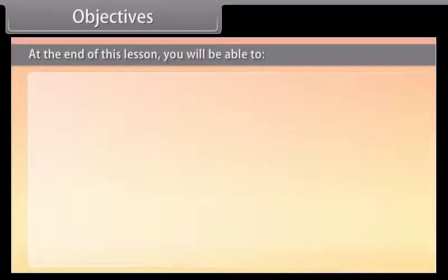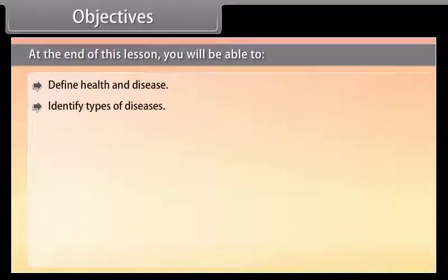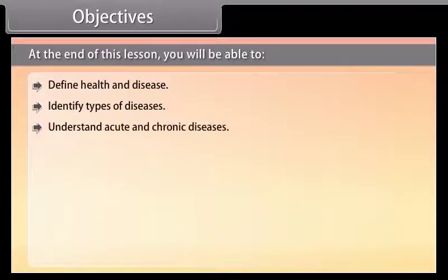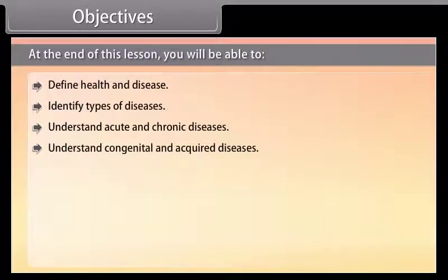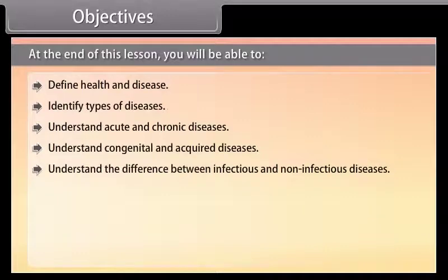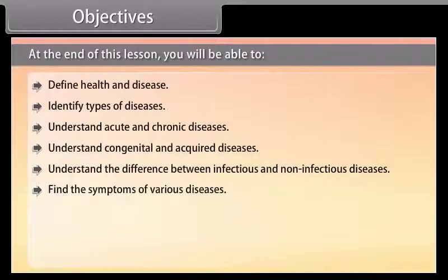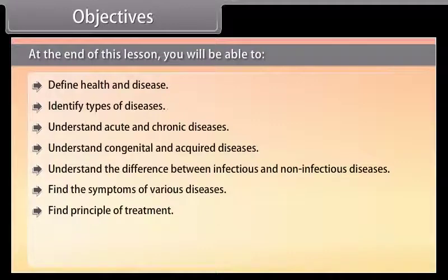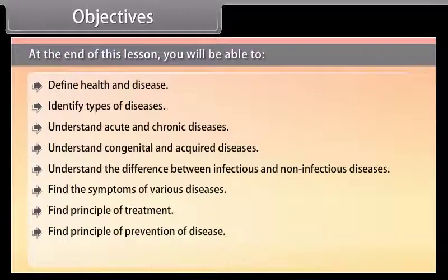At the end of this lesson, you will be able to: define health and disease; identify types of diseases; understand acute and chronic diseases; understand congenital and acquired diseases; understand the difference between infectious and non-infectious diseases; find the symptoms of various diseases; find the principle of treatment; find the principle of prevention of disease; and understand vaccination.